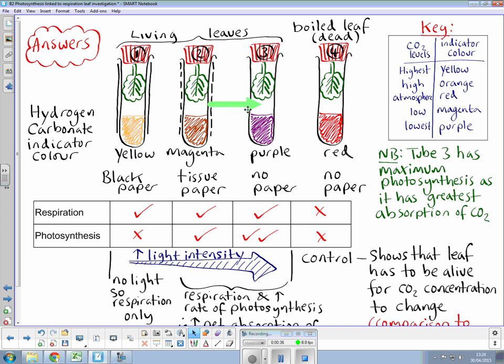If we look at tubes two and three, we have increasing light intensity. We have tissue paper wrapped around which is preventing some of the light reaching the leaf, and then no tissue paper at all, so we have light intensity increasing.